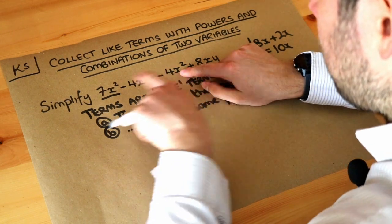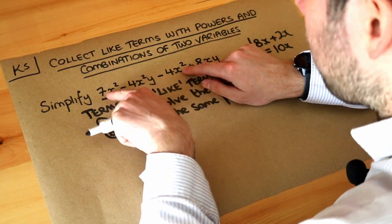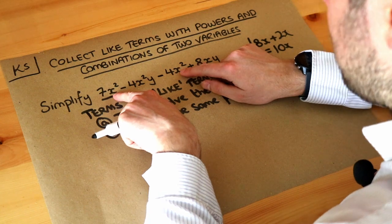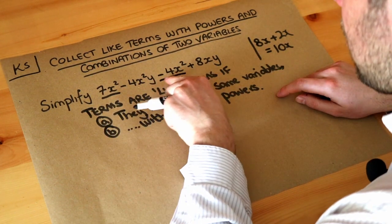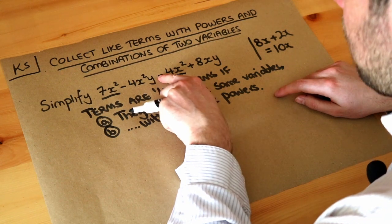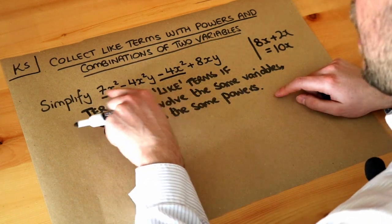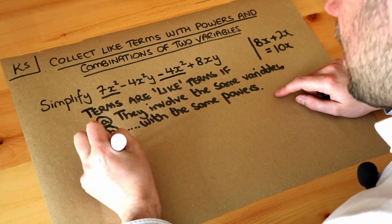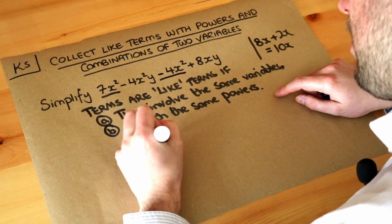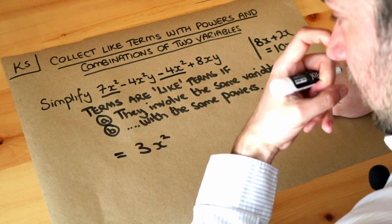What about this one? Well we've got an x squared term again and no other variables, so we can see that these match. So we've got the 7x squared and minus 4x squared. Remember I like to underline each term including the plus or the minus in front of it. And if we have 7 lots of x squared minus 4 lots of x squared, then we've got 3 lots of x squared. So we can just subtract these when they're like terms.